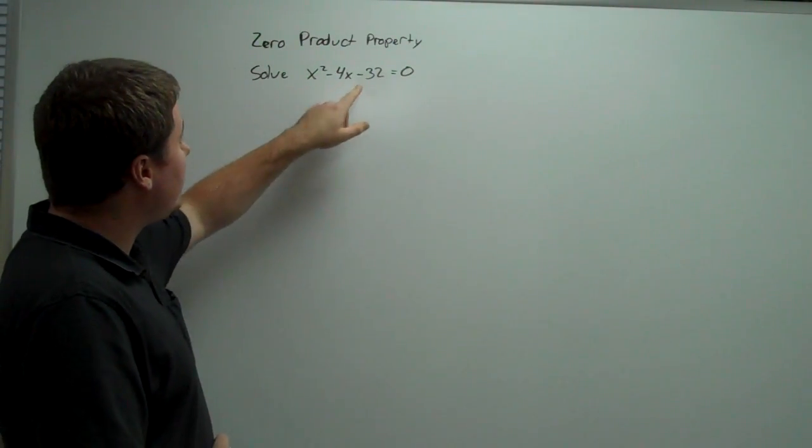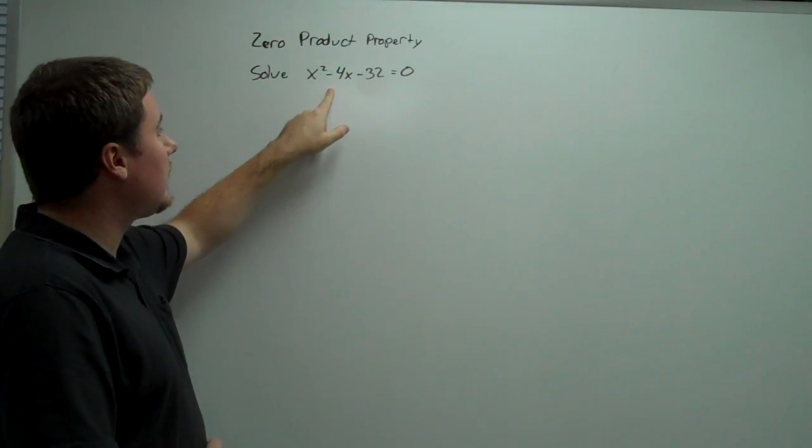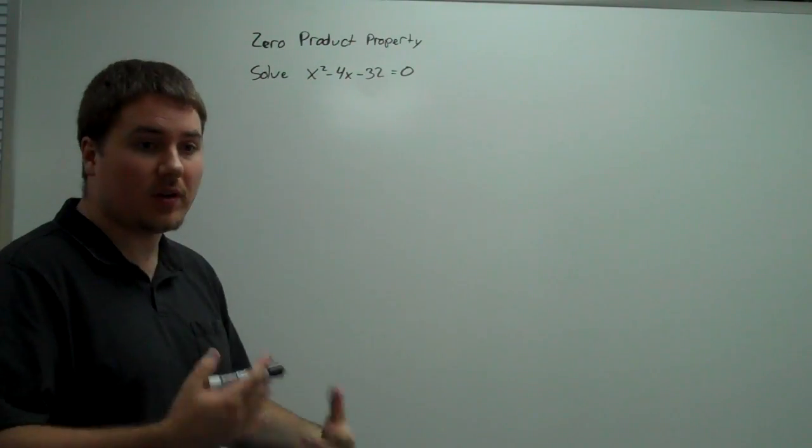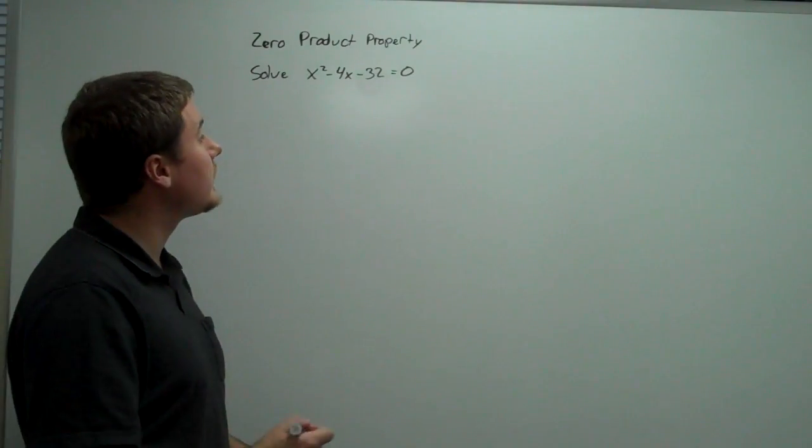So we're going to take factors of negative 32 that combine to negative 4. If you're unfamiliar with how we factor, please go back to my previous videos on factoring.